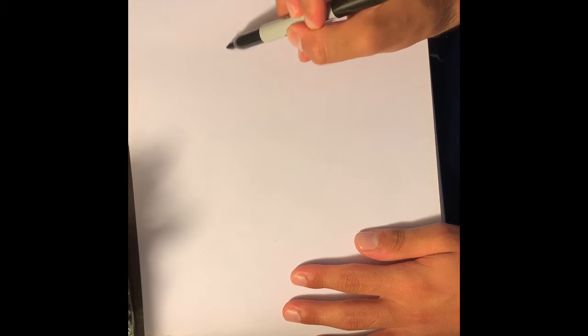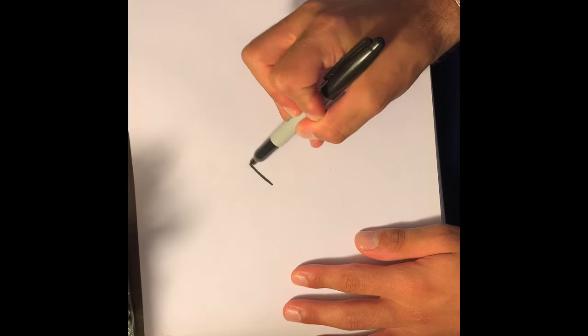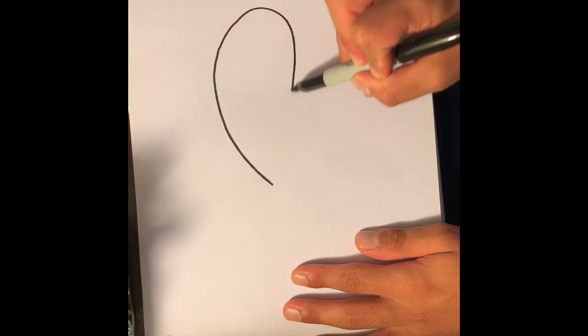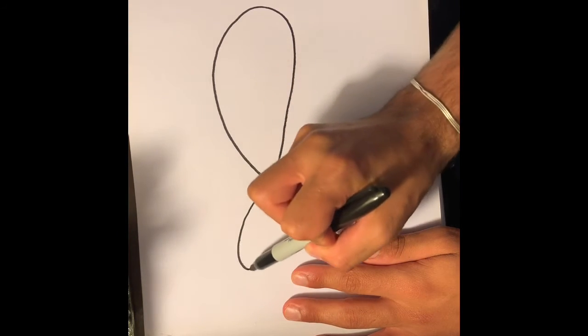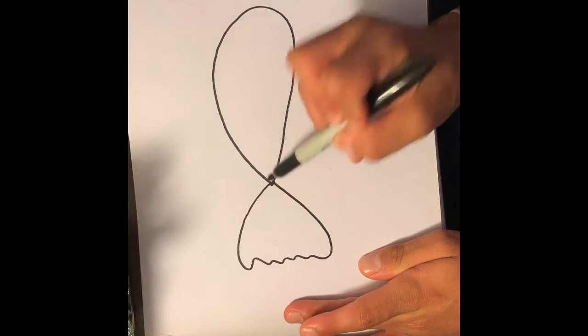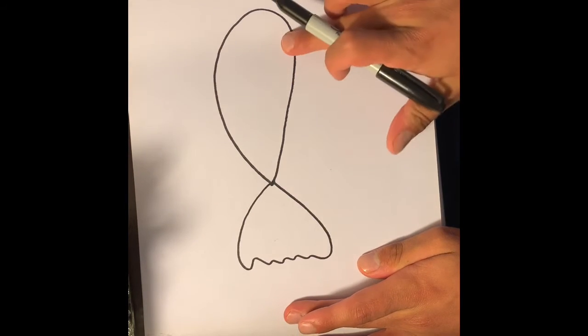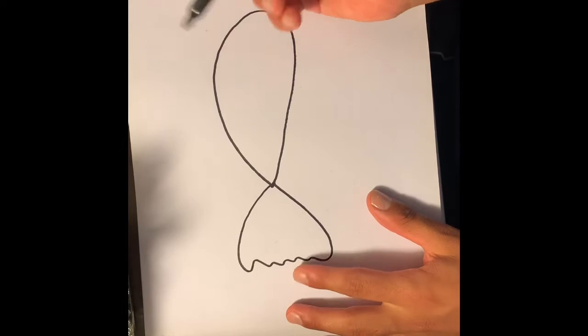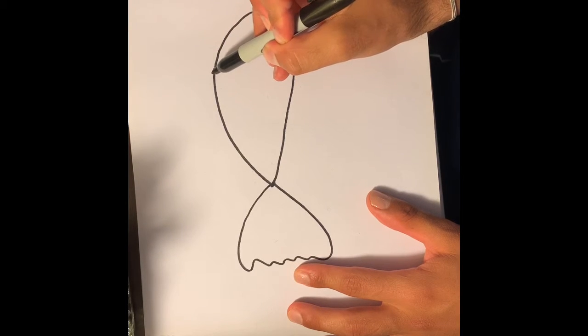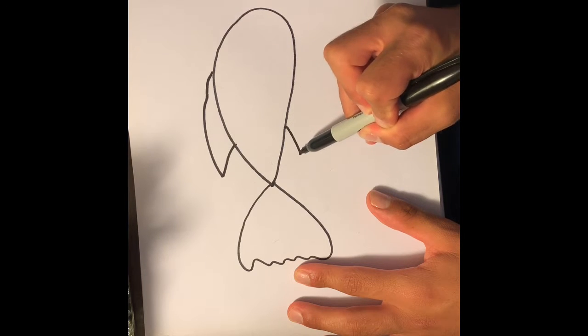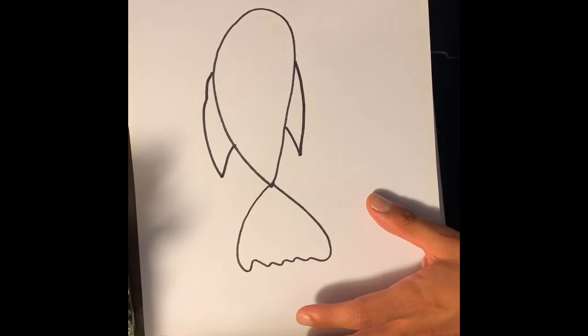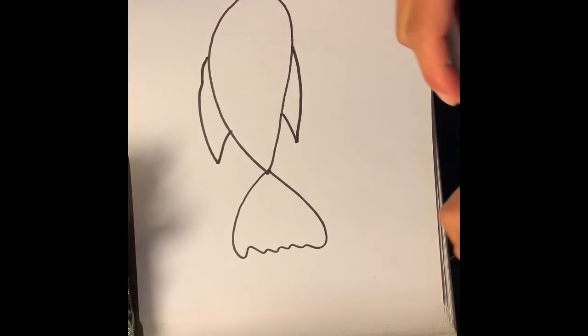So first, we're gonna do like a little teardrop shape. And then we have to do the little fins. That's our outline of the fish. But fish have fins on top of their head and on the bottom.